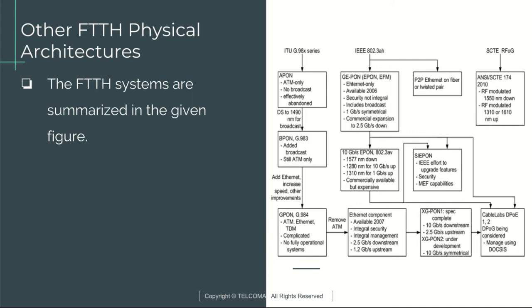This produced the BPON standard which offered a maximum downstream speed of 622 mbps and an upstream speed of 155 mbps and which has been deployed rather widely in much of Verizon's FiOS network, along with other installations.